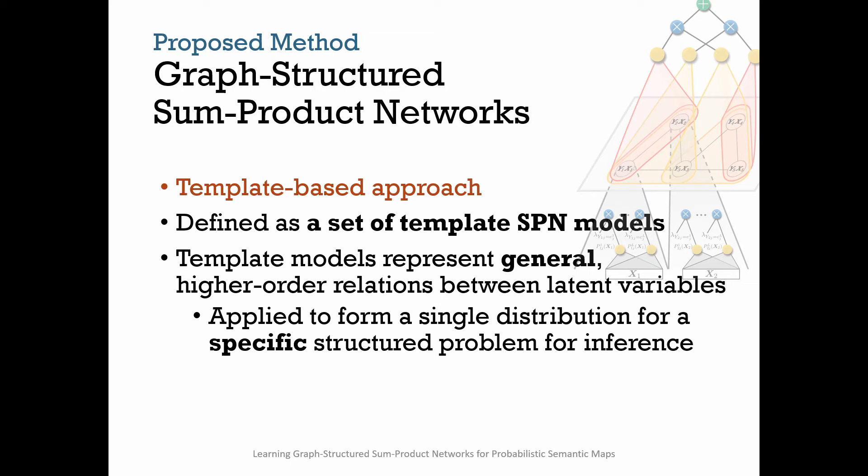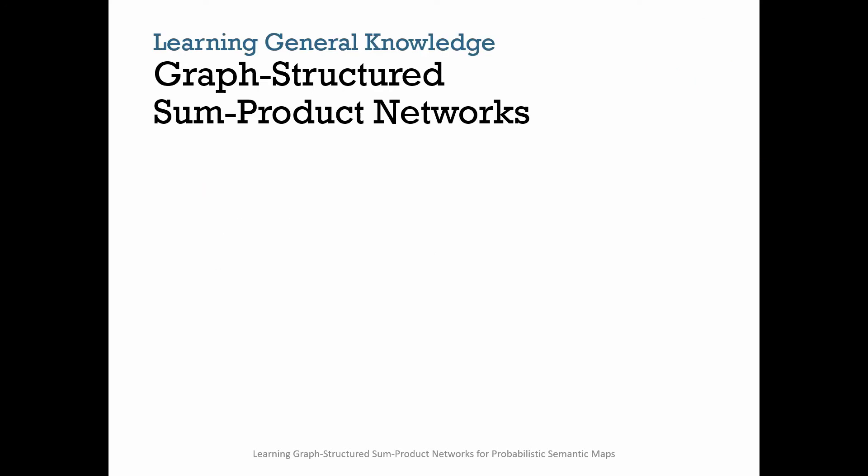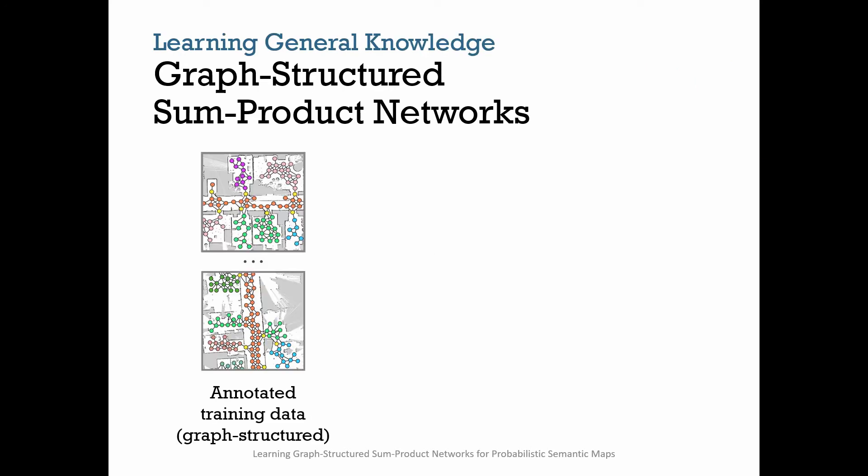Let's see more concretely how we can learn a Graph SPN. Suppose we have a set of training graphs that have different structures and come in different sizes, with local evidence assigned to nodes. Here we see a set of semantic maps with nodes annotated with semantic place attributes.